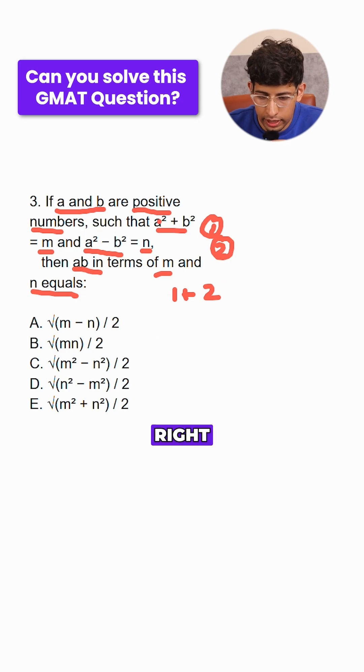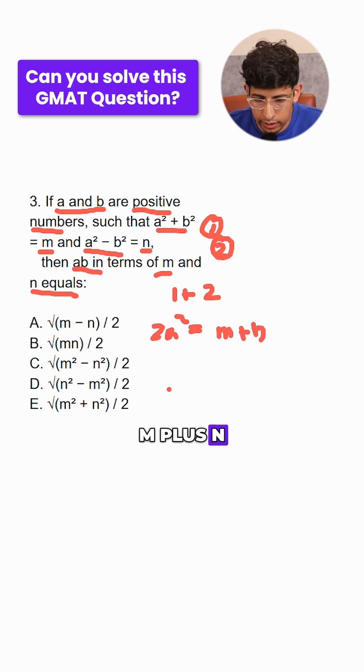So adding them gives us 2a² = m + n. Then we can subtract one equation from the other. What will that give us? That will give us 2b² = m - n.